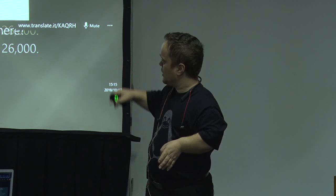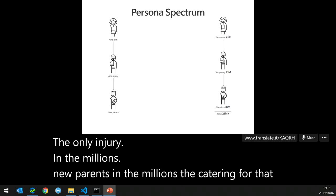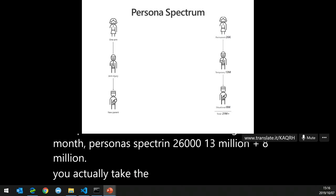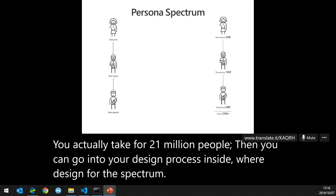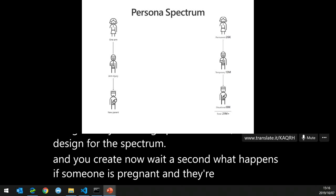Arm injury: millions of people. New parents: millions. So by catering for that one persona spectrum — 26,000 plus 13 million plus 8 million — you actually cater for 21 million people. Then you can go into your design process and say we're designing for this spectrum, and you start to ask: what if someone is pregnant and can't move something heavy? You're broadening and creating innovation by catering for that spectrum.